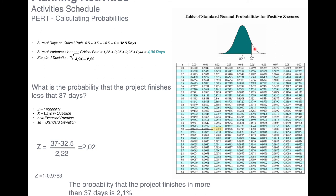The PERT method is more complex but also more comprehensive than the critical path method because it works with three possible durations — most likely, pessimistic, and optimistic. From these, we derive the expected duration, variance, and standard deviation. With expected duration, critical path, and standard deviation, we can calculate the probability of finishing the project within any agreed schedule.